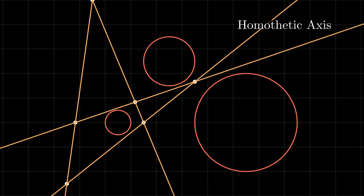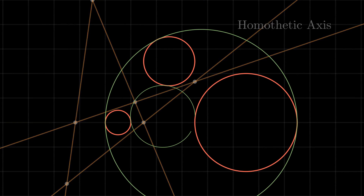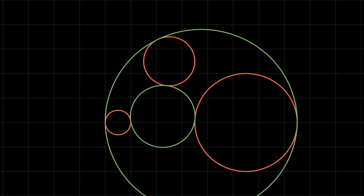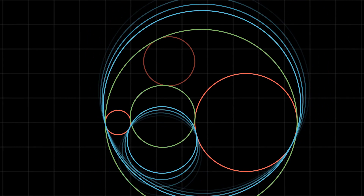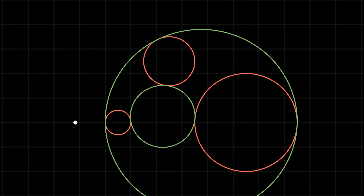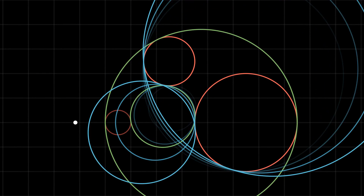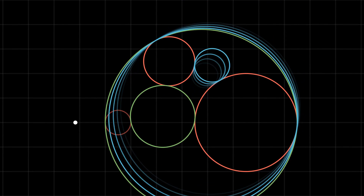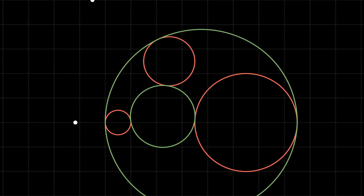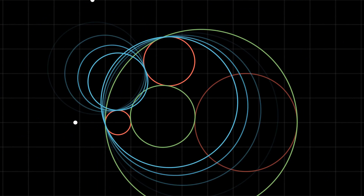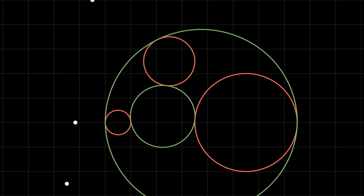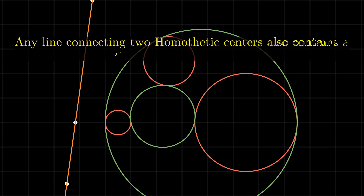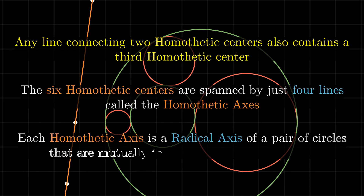It is easy to prove this based on what we have seen so far. Consider a pair of circles tangent to all three given circles. Because those tangent circles belong to the same family generated from the first and second circles, their homothetic center lies on the radical axis of the tangent circles. Similarly, they also belong to the family from the second and third circles, so their homothetic center lies on that radical axis too. Finally, they belong to the family from the third and first circles, meaning the same radical axis applies. This shows that the three homothetic centers lie on a single straight line, which is in fact the radical axis of a pair of circles tangent to all three given circles, demonstrating the importance of the homothetic axis in the Apollonius problem.